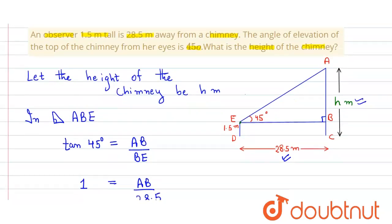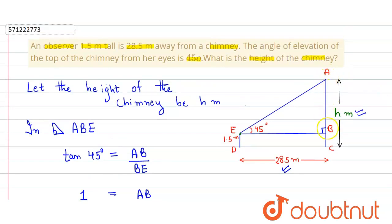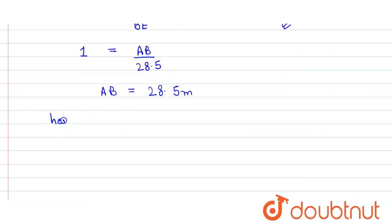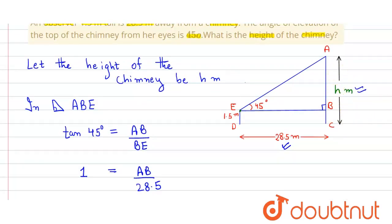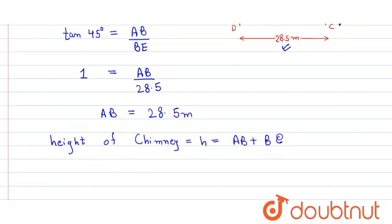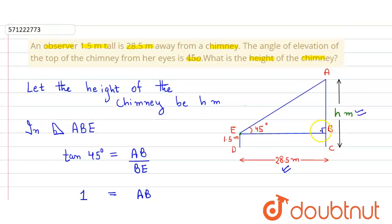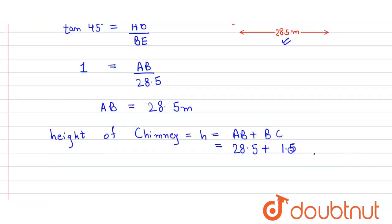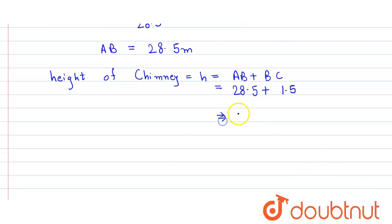We have to find out the height of the chimney. Height of chimney will be equal to AB plus BC. So h equals AB plus BC. The value of AB is 28.5 plus the value of BC is 1.5. So when we add, we get 30 meter. That's our answer.